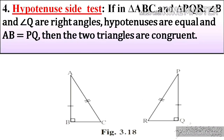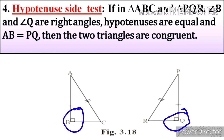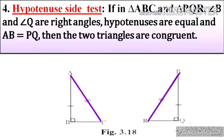Our fourth property is the Hypotenuse Side test. If in triangle ABC and triangle PQR, angle B and angle Q are right angles, the hypotenuses are equal, and side AB is equal to side PQ, then the two triangles are congruent. In the given figure, side AB is equal to side PQ, angle B is congruent to angle Q — both are right angles — and hypotenuse AC is congruent to hypotenuse PR. This property is called the Hypotenuse Side test.